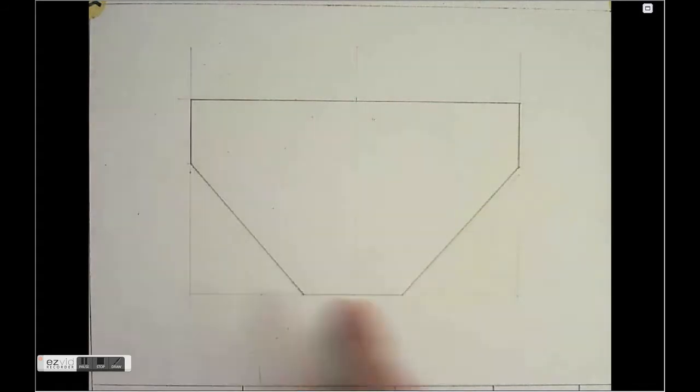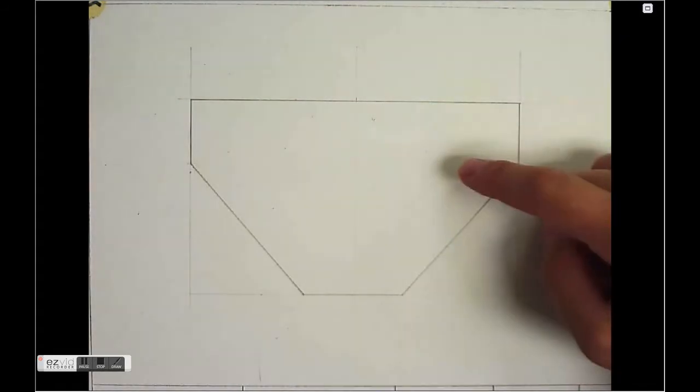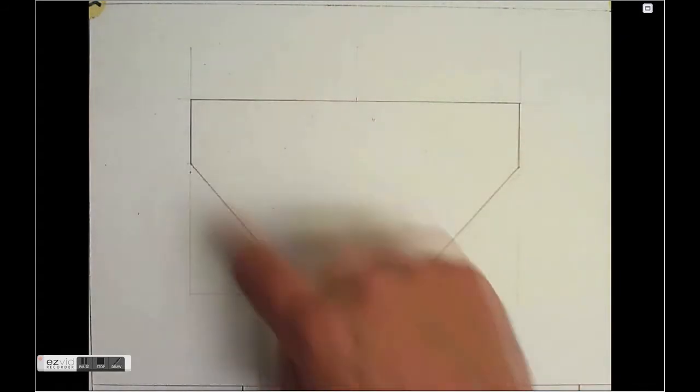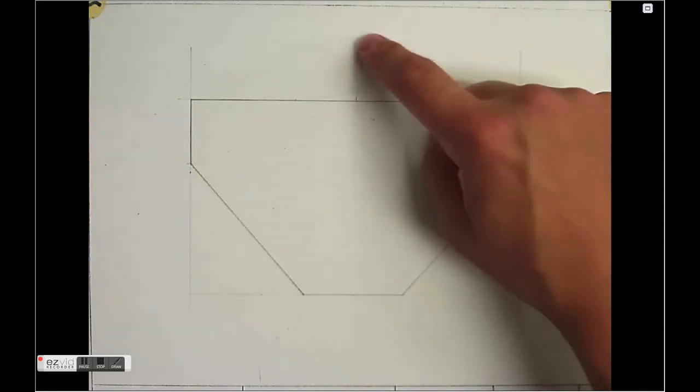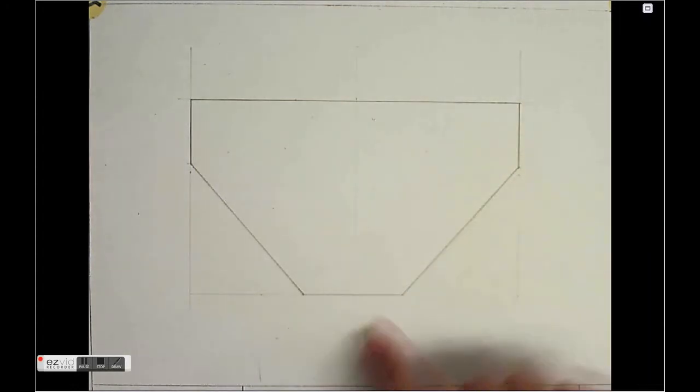You can see how I sectioned it off, and the one thing I did do after I went through and darkened in all my outside lines is I put a center line down the middle. That's going to be key for all of this, as you're going to hear me talk about.